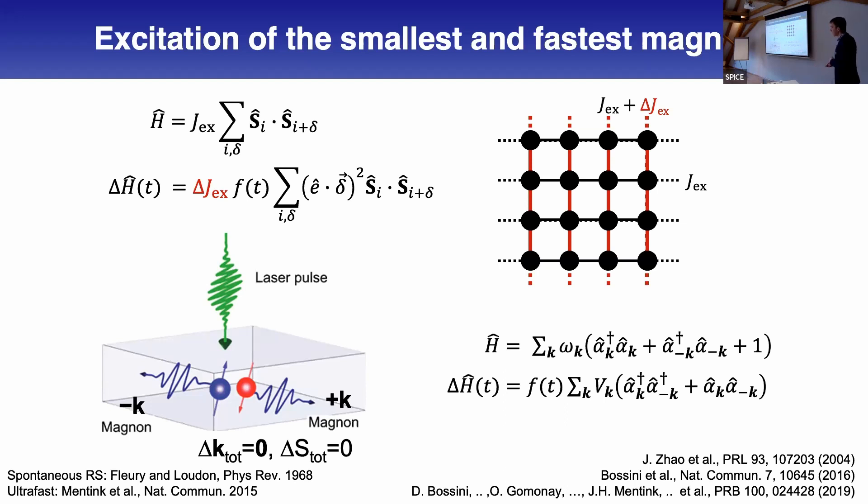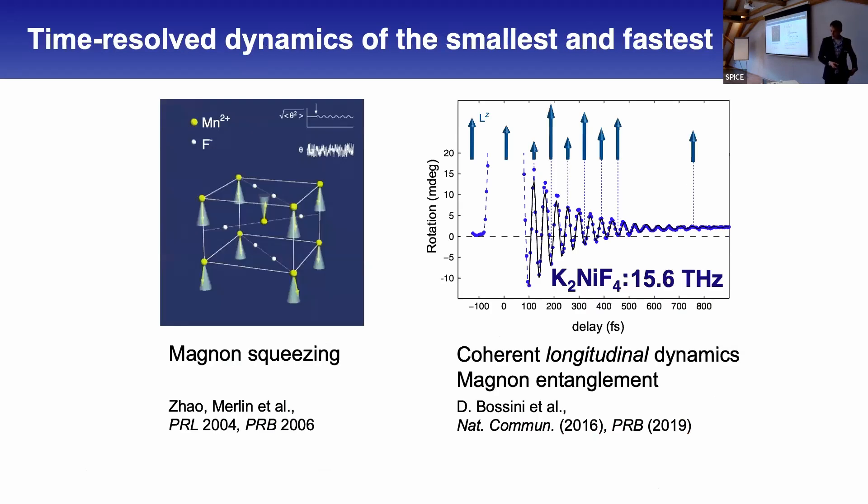From this term you see the dominant excitation mechanism of this BK term will be near the edge of the Brillouin zone. Although this Hamiltonian is isotropic, the light-matter interaction is not isotropic. The electric field is along the vertical bonds, so only those bonds are perturbed, but the horizontal bonds are not. That's why we get this dominance and this dynamics.